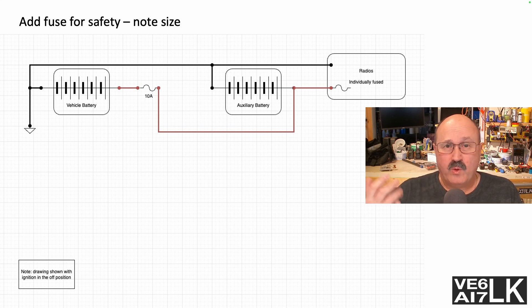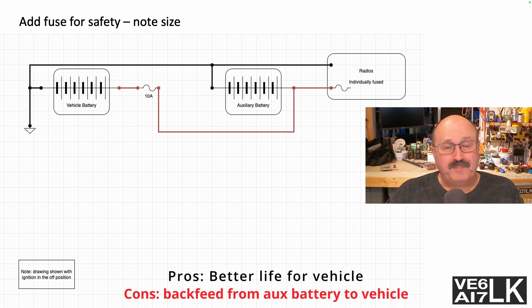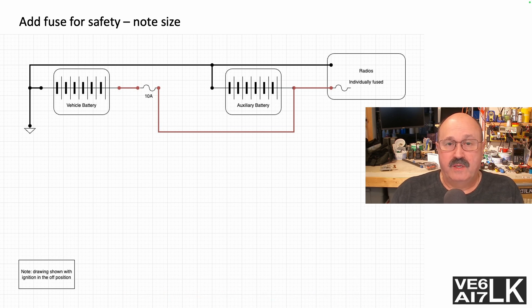Although you can still run the bigger gauge wire and you'll just have less voltage drop—that's never a bad thing. But the problem here is that this auxiliary battery can backfeed into your vehicle, and there's still nothing preventing it from draining your vehicle's battery when the engine is shut off.